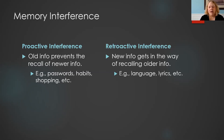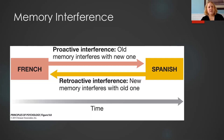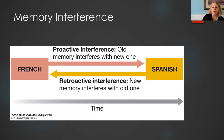Retroactive interference is when new information gets in the way of recalling old information. We can see both types when learning a language. As we start to learn a new language, we have a hard time learning it because all we can remember is our previous language. Then vice versa happens as we get better at the new language — we may have a hard time recalling certain words from the previous language.